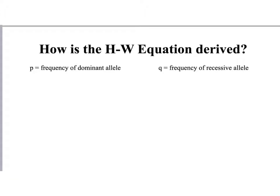To start applying the Hardy-Weinberg equation, it's helpful to see how it's derived. We use P as the frequency of the dominant allele and Q as the frequency of the recessive allele. P plus Q always equals 1, because we're expressing allele frequencies as proportions of the total gene pool — P is the frequency of the dominant allele and Q is the frequency of the recessive allele, and together they account for all alleles.